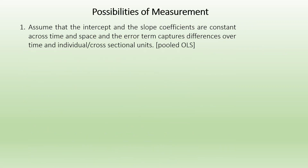Now, there are five possible models which can be made in panel data regression. The first one assumes that the intercept and the slope coefficients are constant across time and space, and the error term captures differences over time and individual cross-section units. That's a pooled OLS. This means we will have a single regression equation for the entire panel data, assuming that the data is homogeneous and there is no heterogeneity in our data set.